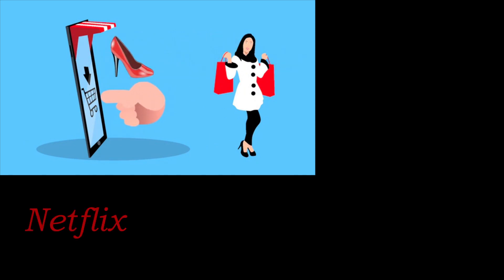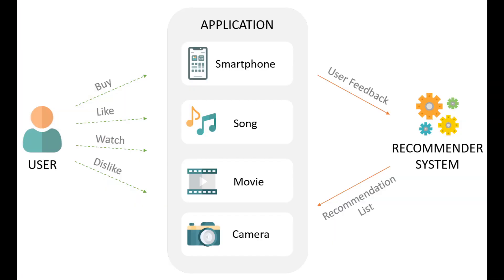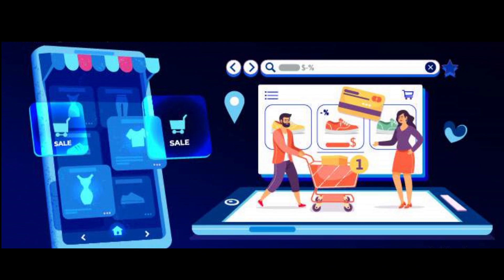Examples of popular recommender systems are Netflix, Spotify, and Amazon. When it comes to Amazon, the recommender system is based on multiple combinations of collaborative filtering and content-based algorithms. In simpler terms, it uses past customer behaviors to make recommendations for new products.